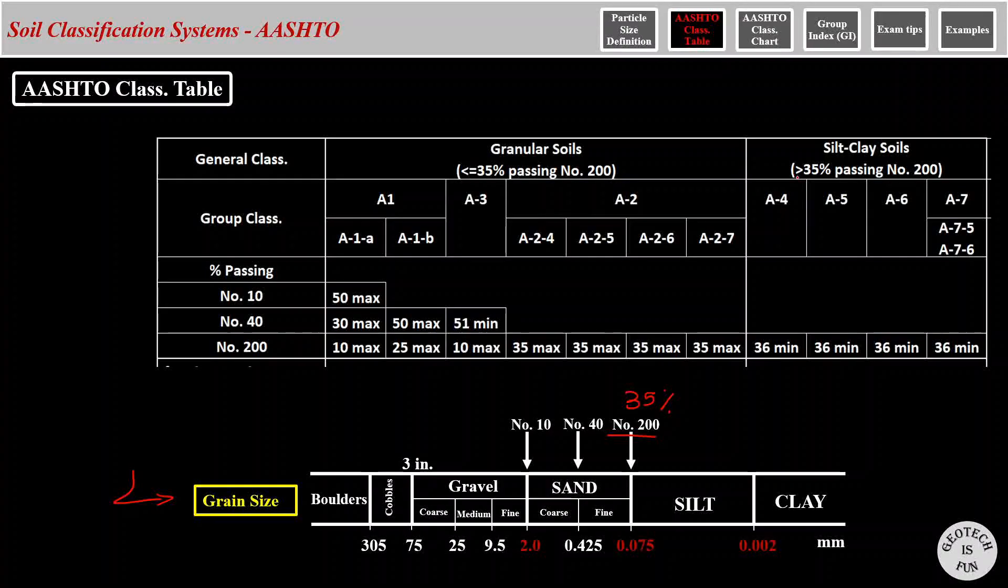Based on AASHTO, if more than 35% of the soil or material passes through sieve number 200, we have silty or clay soils. And if less than or equal to 35% passes through sieve number 200, we have granular soils. This is also included here in the table. Here is sieve number 200. Here is the boundary of 35%. And you can see we have more than 35% on the right, and less than or equal to 35% on the left side of this boundary.